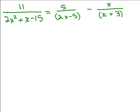So I know I have a factor of 2x minus 5 and a factor of x plus 3. And what about this 2x squared plus x minus 15? Well, if you multiply these two factors together, you actually get 2x squared plus x minus 15. So this is really the same thing as 2x minus 5 times x plus 3. So the least common denominator is 2x minus 5 times x plus 3.